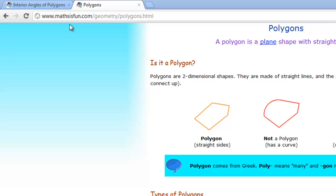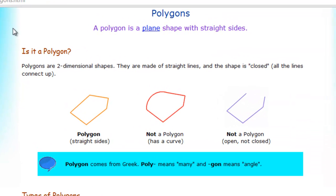We're over on the Math is Fun website, which has a webpage about polygons. They define a polygon as simply a plain shape with straight sides. They give examples of what is and isn't a polygon. One example shown is an irregular polygon since the sides are not all the same length. Two other shapes are not polygons — one due to a curve and another due to an opening.